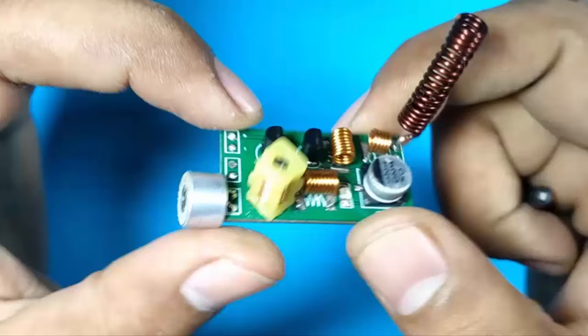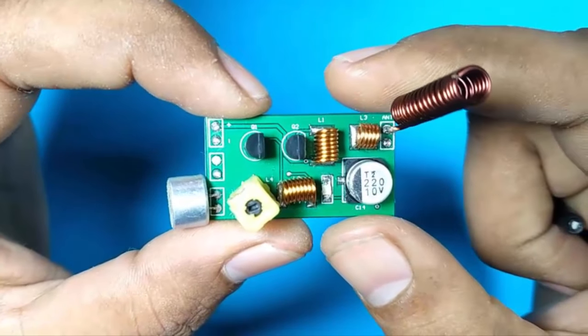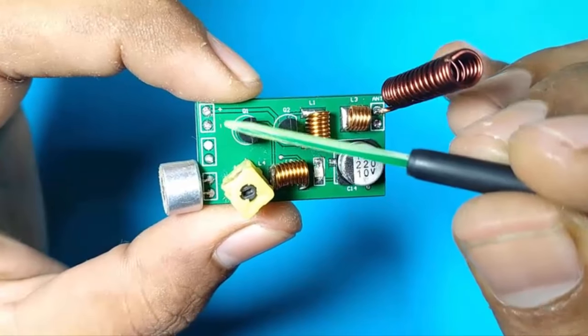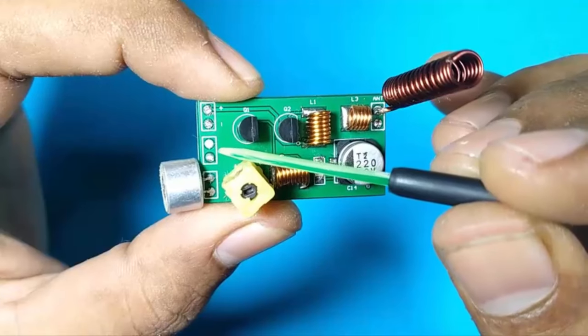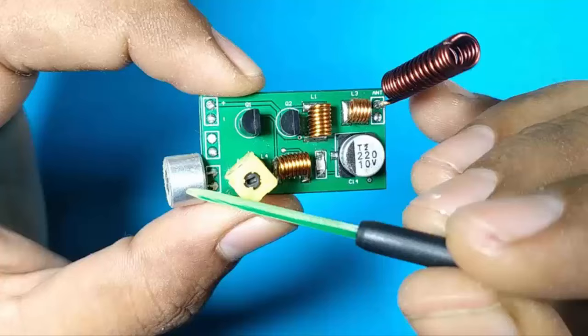This time, we will take an overview of this circuit. On the top side there are 3 connection points: power input, external audio input, means you can connect this with any audio source, and mic input.